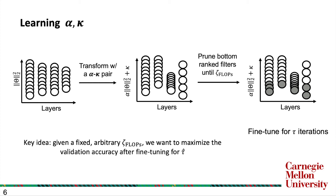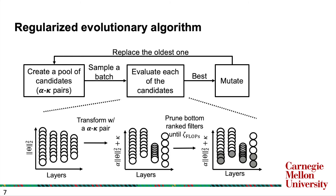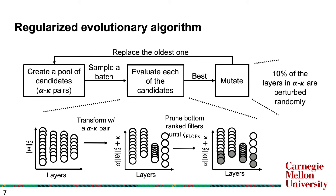To optimize alpha and kappa, we resort to zero-order optimization techniques. In particular, we use a regularized evolutionary algorithm first proposed for neural architecture search. In this algorithm, we first create a pool of candidates — meaning a pool of alpha-kappa pairs — sample a batch of alpha-kappa pairs, and evaluate each candidate using the pipeline just described. We select the candidate with the best validation accuracy and mutate it, where mutation is done by randomly perturbing 10% of the layers. The mutated output is placed back into the pool, and the algorithm iterates for some number of iterations.